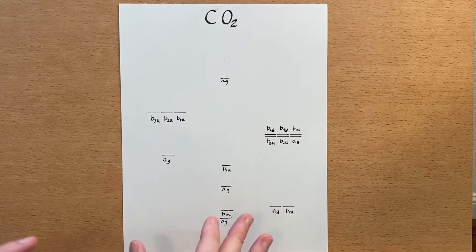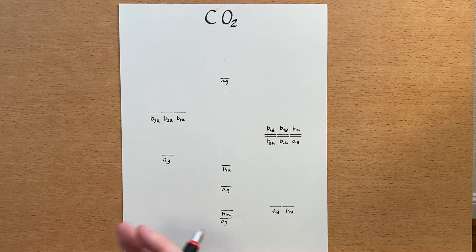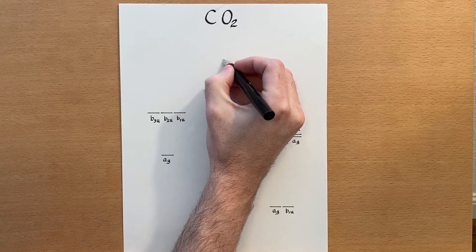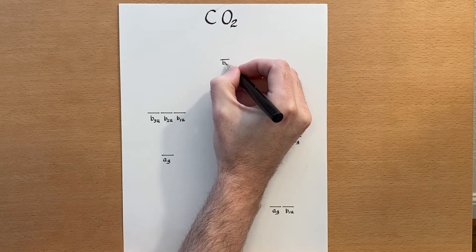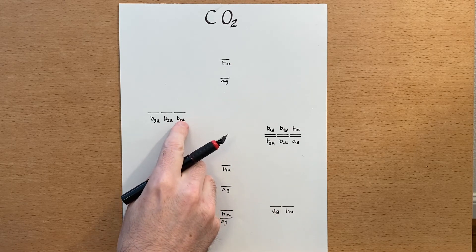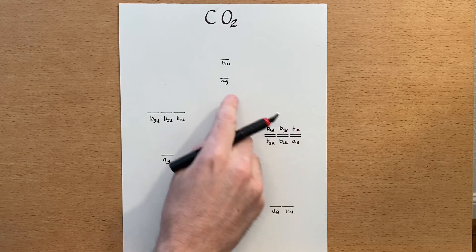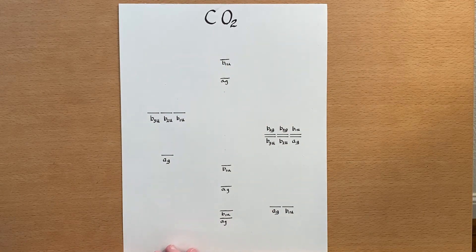There's another sigma bond between the carbon pz orbital and the oxygen pz orbital. Now we need to address the anti-bonding interaction. Since it has more nodes — in fact the highest number of nodes — it will have the highest energy, right up here. So we have the carbon pz combining with the oxygen pz in an anti-bonding fashion to make an additional sigma anti-bonding orbital at the very top.